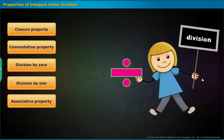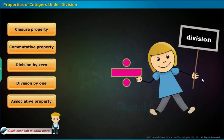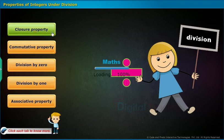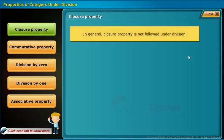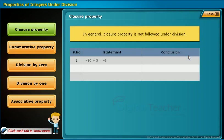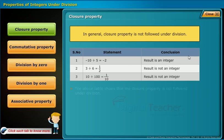Properties of integers under division. Let us see whether the following properties satisfy integers under division. Closure property is not followed under division. For example: minus 10 by 5 equals minus 2 (an integer), but 3 divided by 6 gives 1 by 2, which is not an integer. Similarly, the last statement is also not an integer. Therefore, closure property is not followed under division.